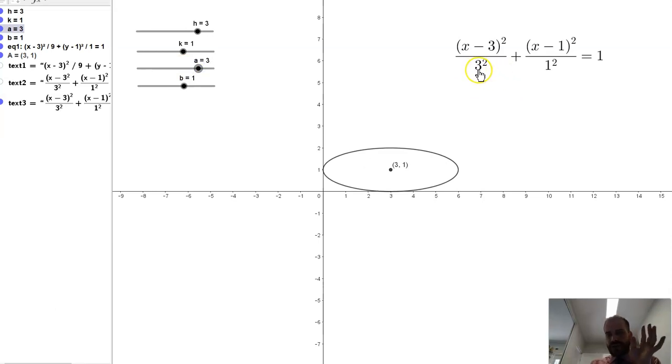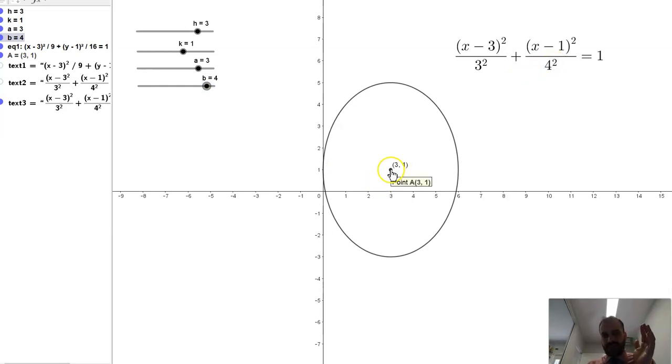You can see I've got 3 squared, so that's 9, but if I've got a denominator of 9 on that fraction, I'm going to have a radius of my ellipse across the parallel to the x-axis of 3. And similarly, if I change my b value, which is this number here, that's 4 squared, which is 16, but I'm going to get a radius of 4 here.